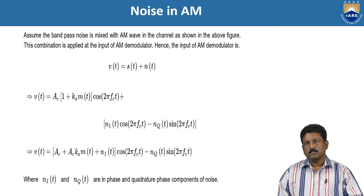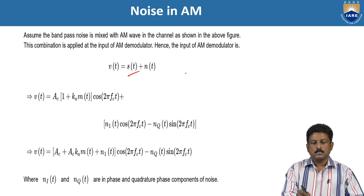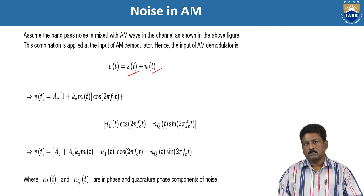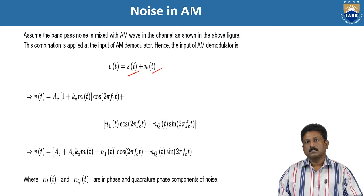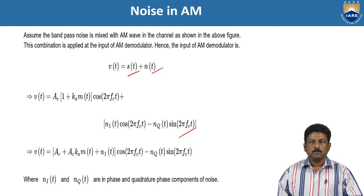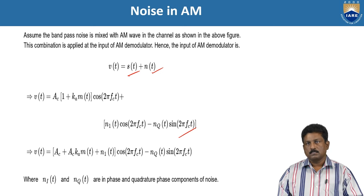At the output, V(t) = S(t) + N(t). From the diagram, V(t) = AC(1 + KA·m(t))·cos(2πfc·t) + NI(t)·cos(2πfc·t) − NQ(t)·sin(2πfc·t), where NI(t) and NQ(t) are the in-phase and quadrature-phase components of the noise, as discussed in the previous class. Expanding, V(t) = [AC + AC·KA·m(t) + NI(t)]·cos(2πfc·t) − NQ(t)·sin(2πfc·t).